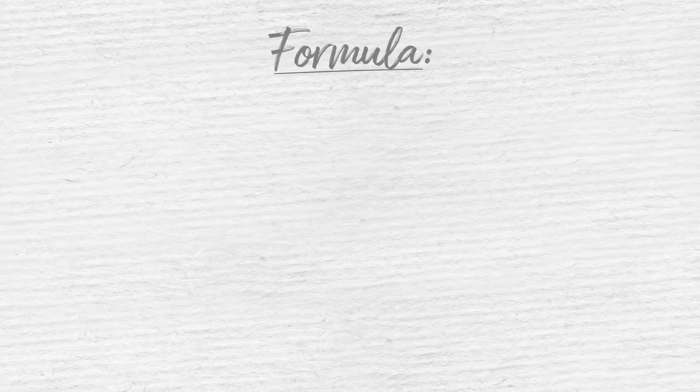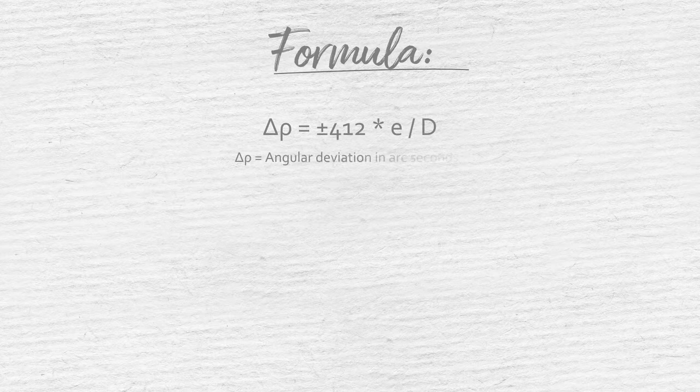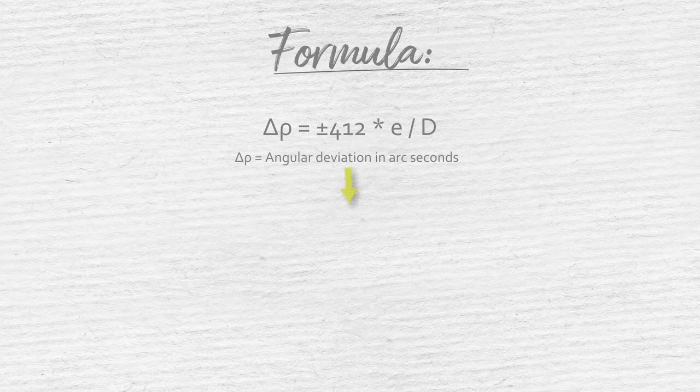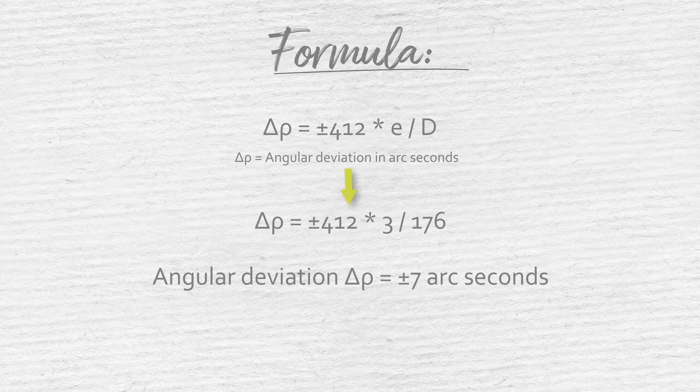When we insert these values into the equation, the angular deviation delta rho equals 412 times E divided by D, the angular deviation due to improper mounting is therefore 7 arc seconds.